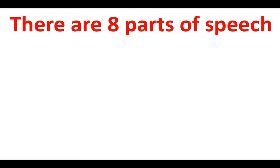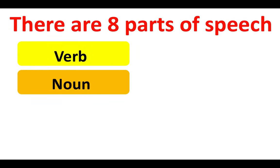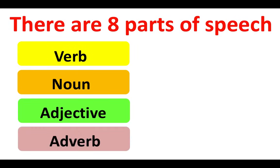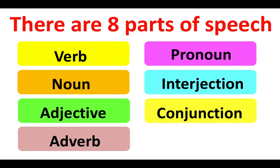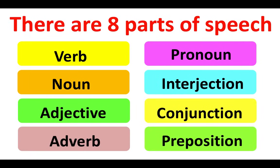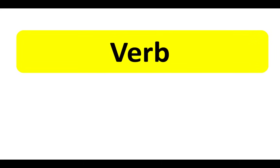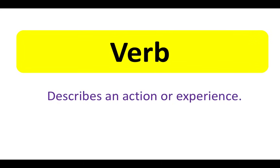There are eight parts of speech: verb, noun, adjective, adverb, pronoun, interjection, conjunction, and preposition. These allow us to structure a grammatically correct sentence, as each has a different function within a sentence. A verb describes an action or experience.